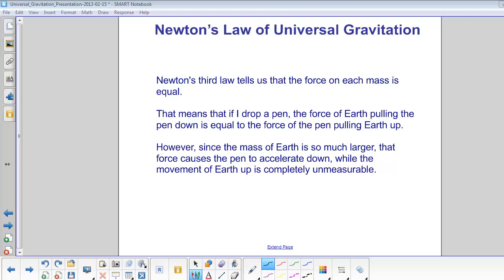Like I said, Newton's third law tells us the force on each mass is equal. So that means if I drop a pen, the force of the Earth pulling down on the pen is equal to the force of the pen pulling up on the Earth. That sounds crazy. How could something as small as a pen pull up on something as large as the Earth? But since the mass of the Earth is so much larger, that force causes the pen to accelerate down while the movement of the Earth up is completely unmeasurable.